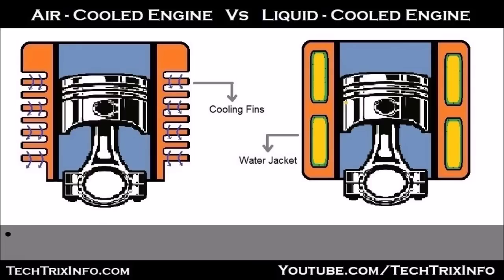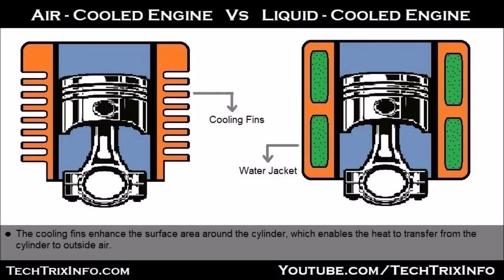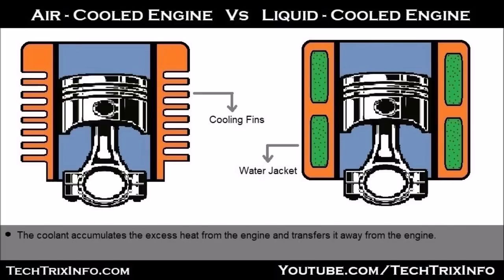The antifreeze and water passes through the water jacket, which cools the liquid-cooled engine. The air-cooled engine employs large cooling fins and outside air to transfer excess heat from the engine. As you can see, the air is passing through the fins. The cooling fins enhance the surface area around the cylinder, which enables the heat to transfer from the cylinder to outside air. In a liquid-cooled engine, coolant is circulated through the water jackets in the engine cylinder block and cylinder head.